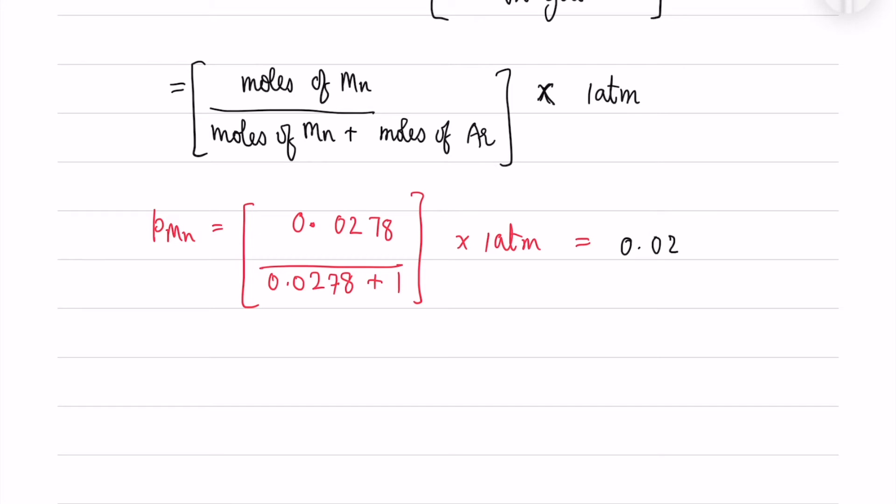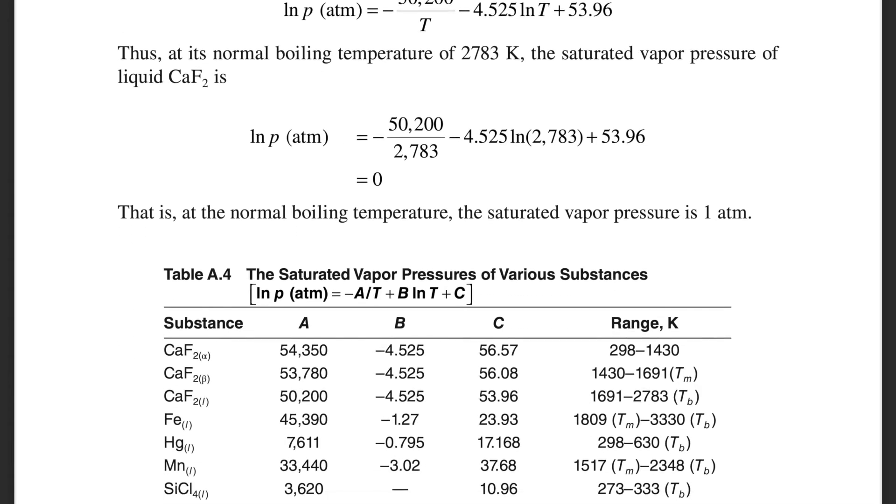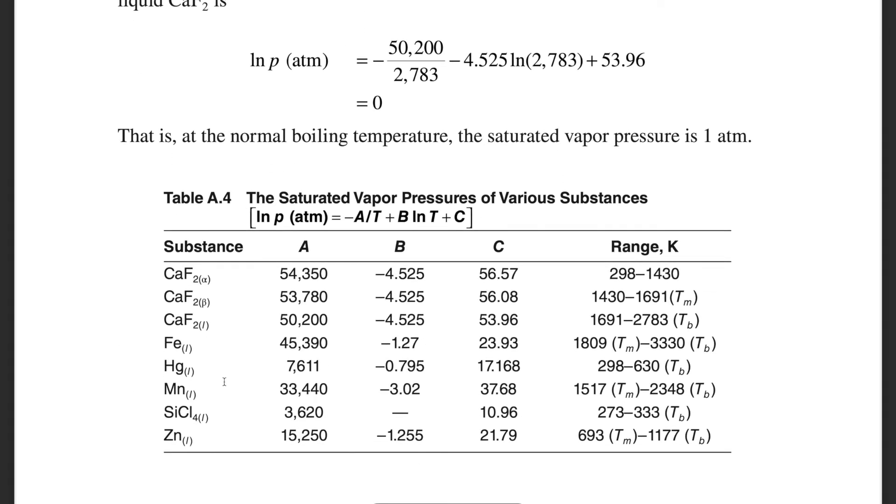That is around 0.0266 atm. Now, if you go to Gaskell Appendix A and table 8.4, you have manganese and the saturated vapor pressure is given by this formula.